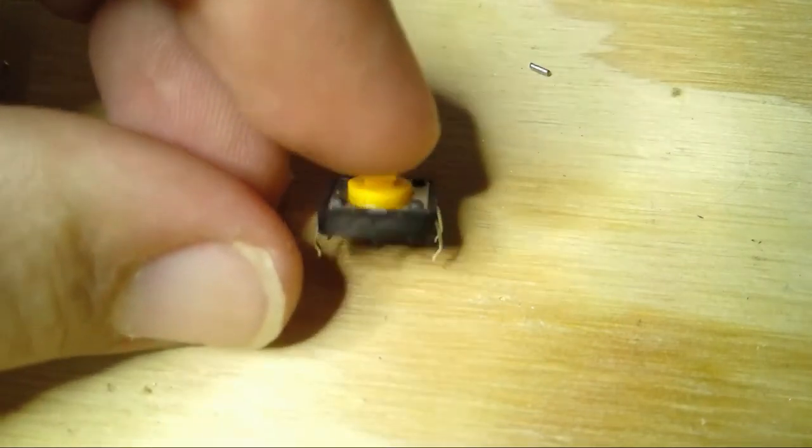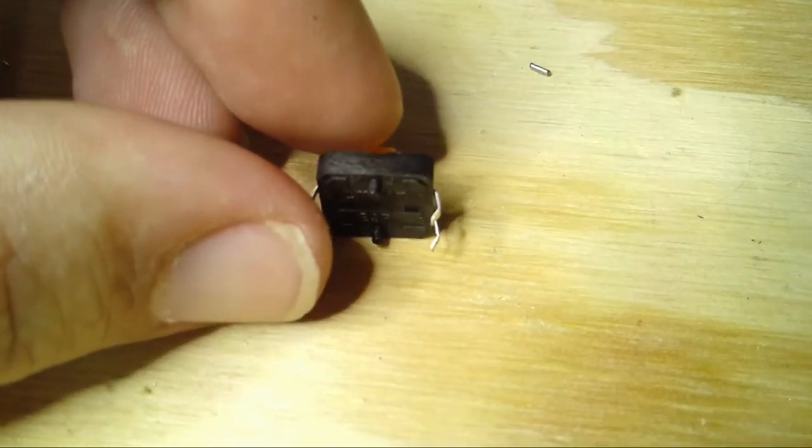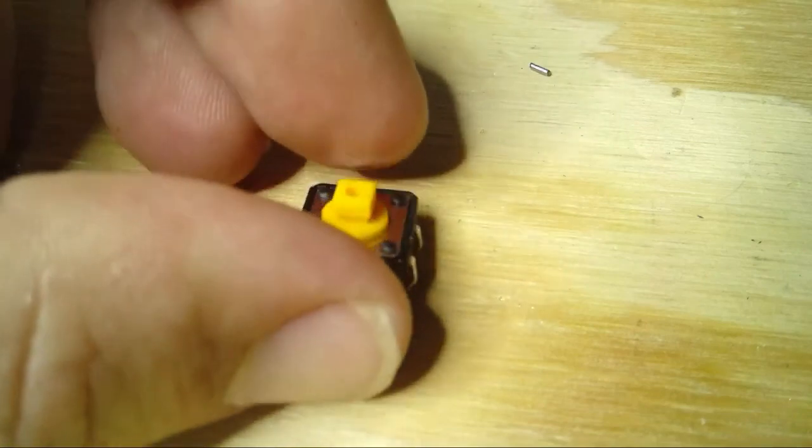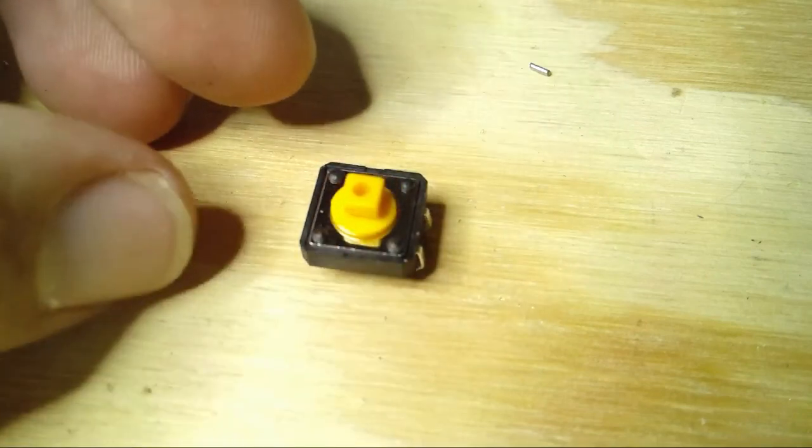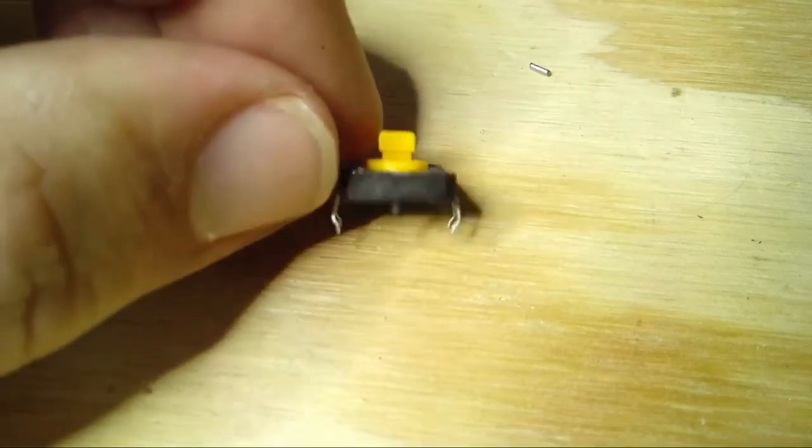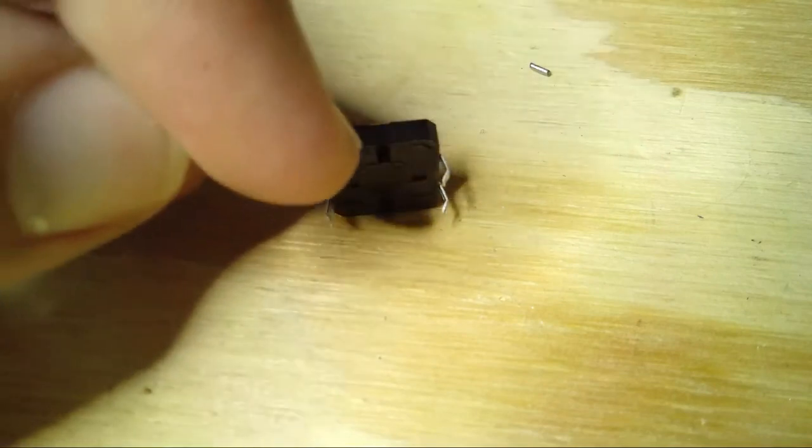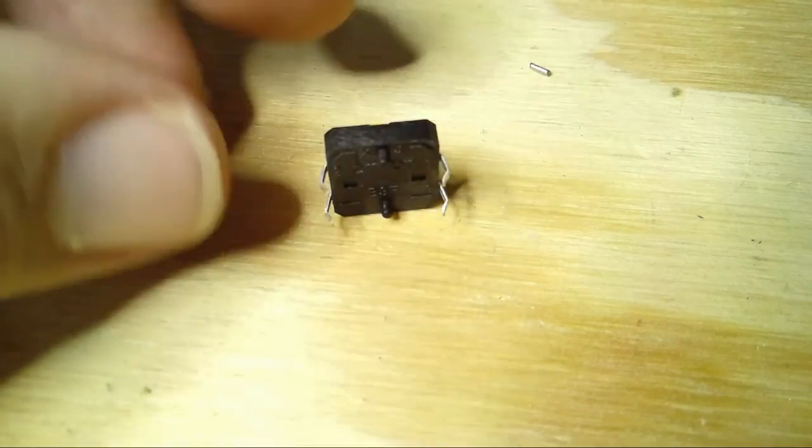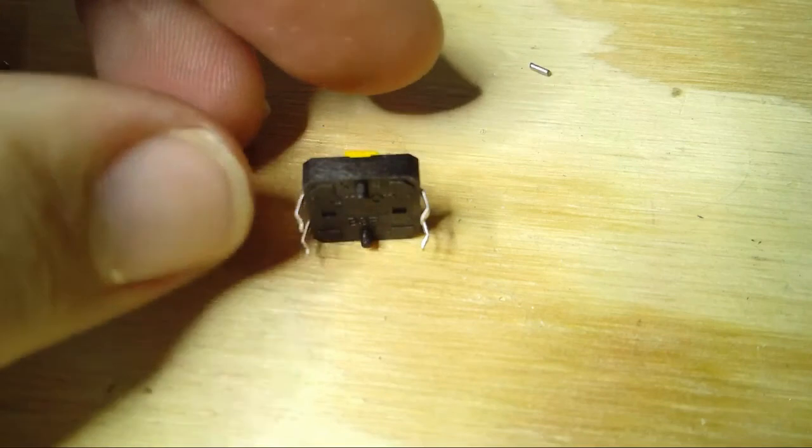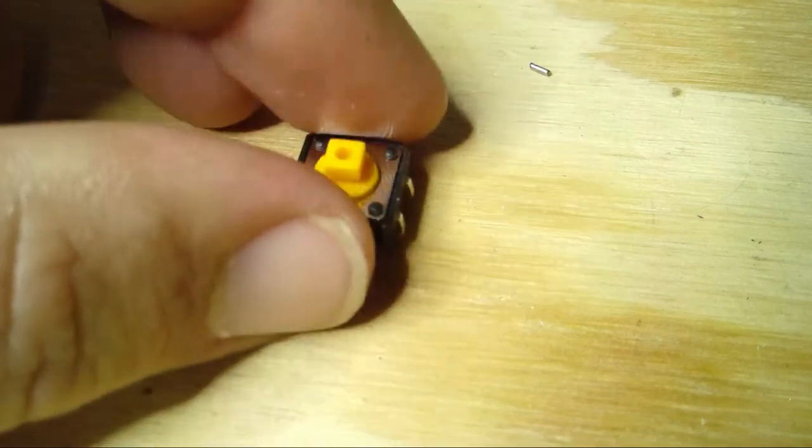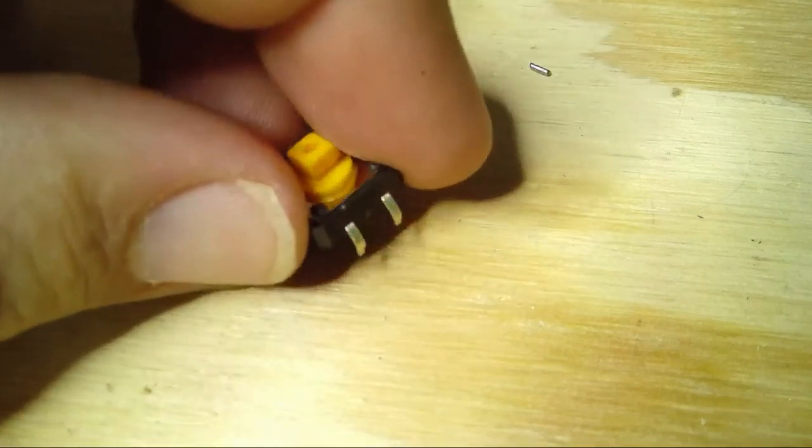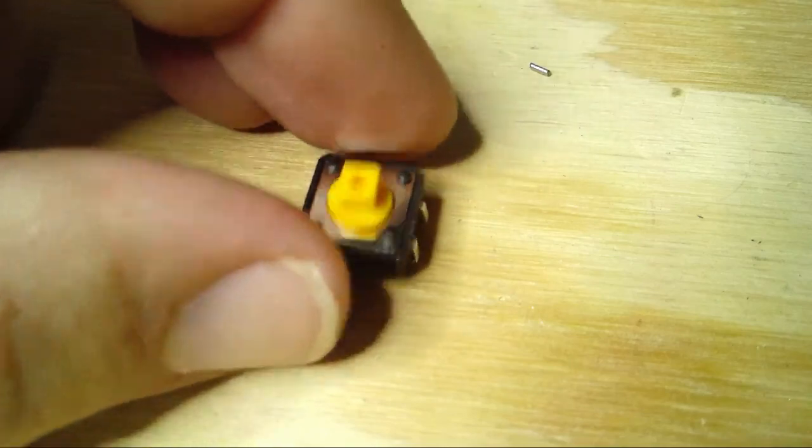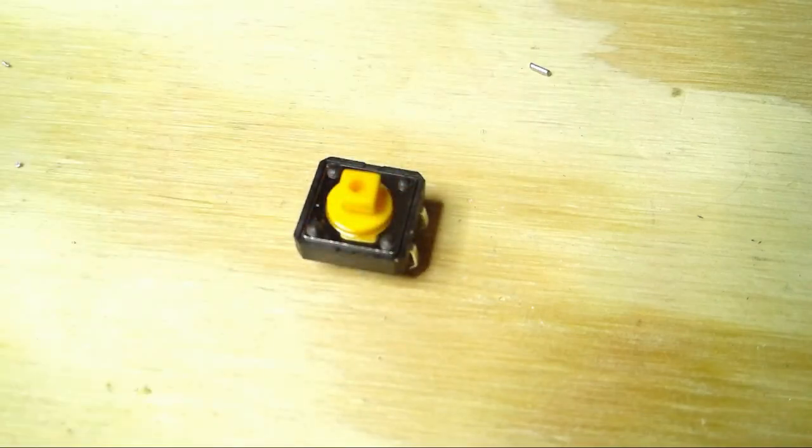Here's a close-up view of the button switch we're using. There are a couple changes we're going to have to do to make this fit. The first is you'll see there are little tabs on the bottom. Here and here are little plastic tabs. We're going to cut those off just so that it fits flush. Also, you'll see that it actually has four legs, four solder points. We're only going to use two of them, so we're going to bend the other two down.